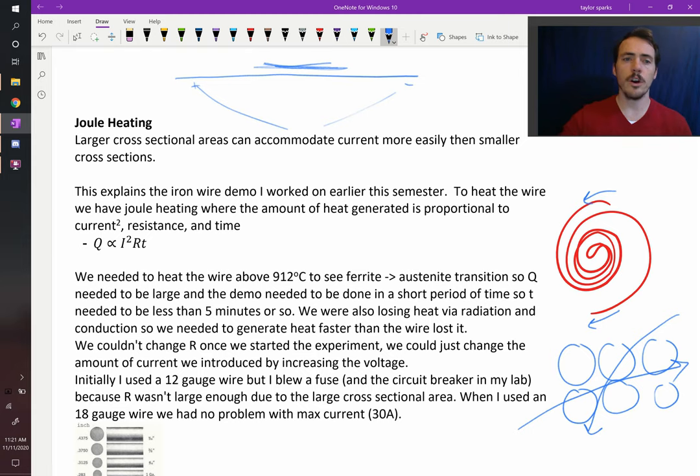Something we should know is the equation that tells you how much heat you're going to get for a given current. Our expression for the heat that we generate as a function of current, resistance, and time is as follows: it's proportional to the current squared multiplied by the resistance multiplied by time: Q ∝ I²Rt. That will be how much heat we generate.